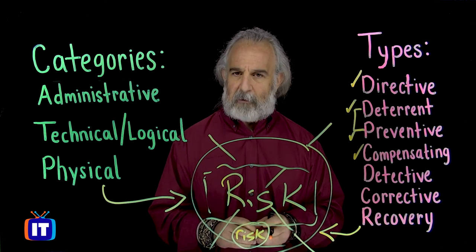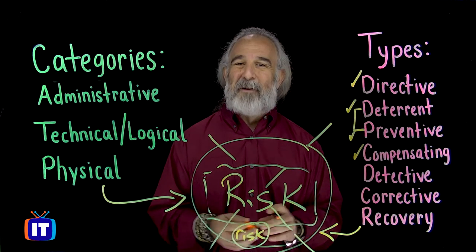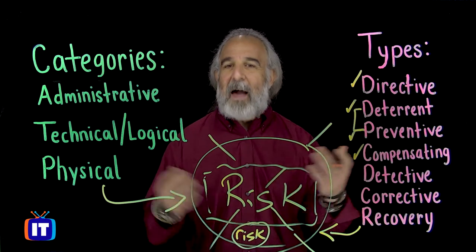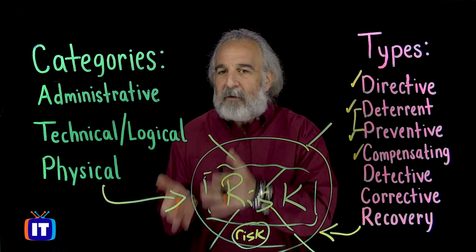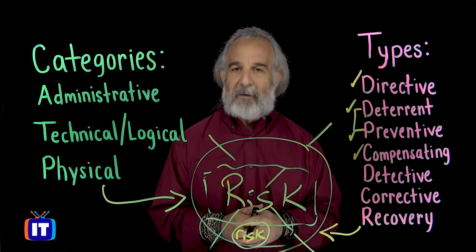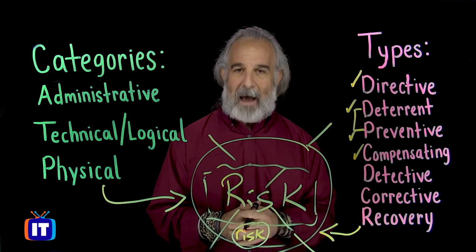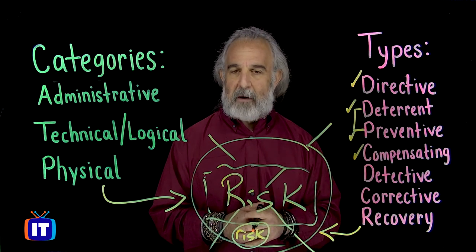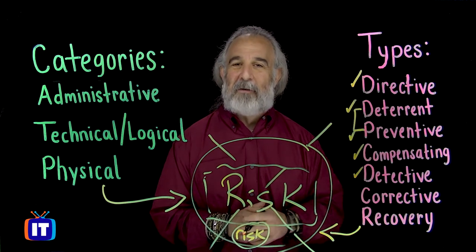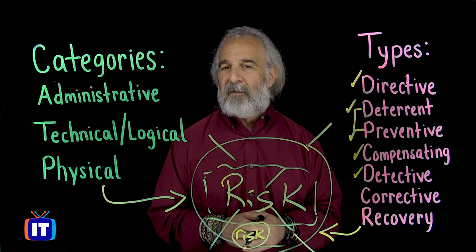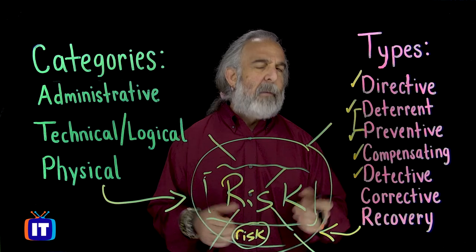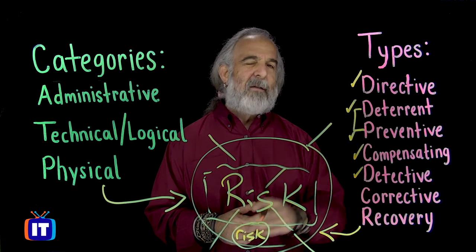Detective controls are just like detectives in real life — they look for clues and alert us that things are abnormal and we should pay attention, because something bad has happened or is about to happen. Like Sherlock Holmes, they are good sleuths that uncover activity likely to be an issue so we can take action to correct it.